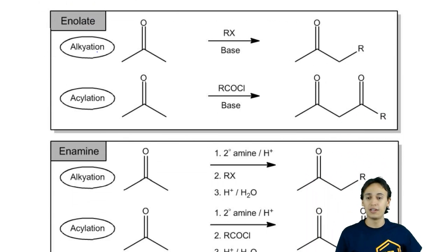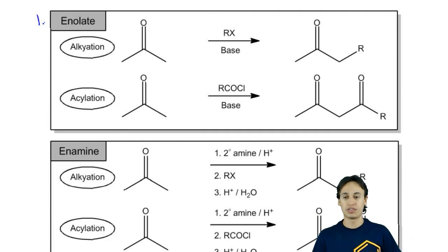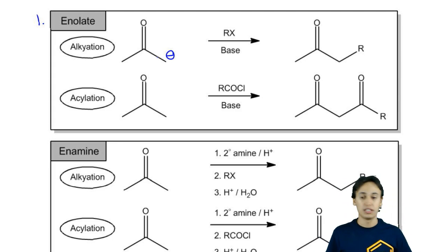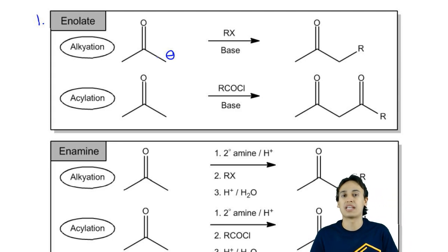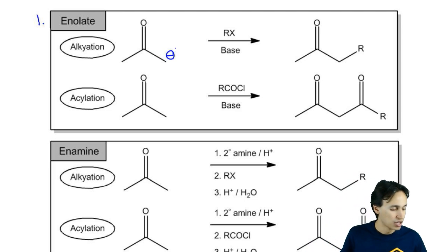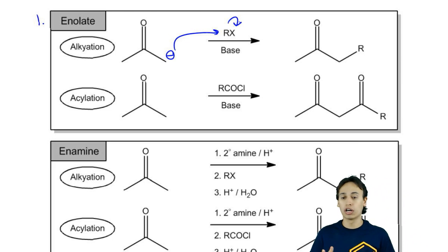The first method is direct enolate alkylation. Enolate alkylation just says that I'm going to use a base to form an enolate. That enolate is then going to attack an alkyl halide. Then I would do a backside attack and I'm going to get an R group on that enolate. Of course, we'll talk more about this in the actual page about enolate alkylation.